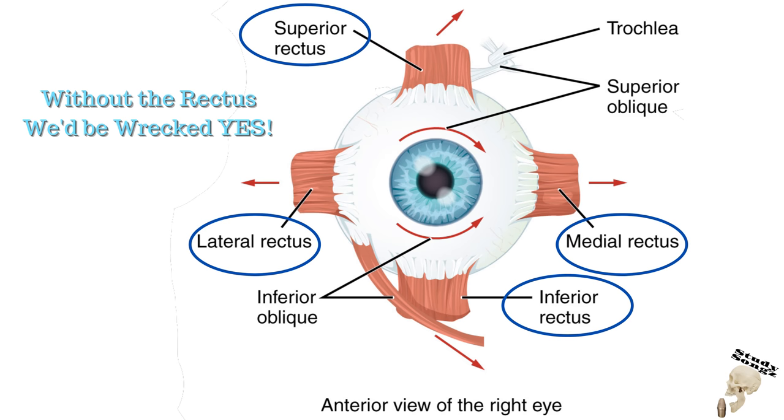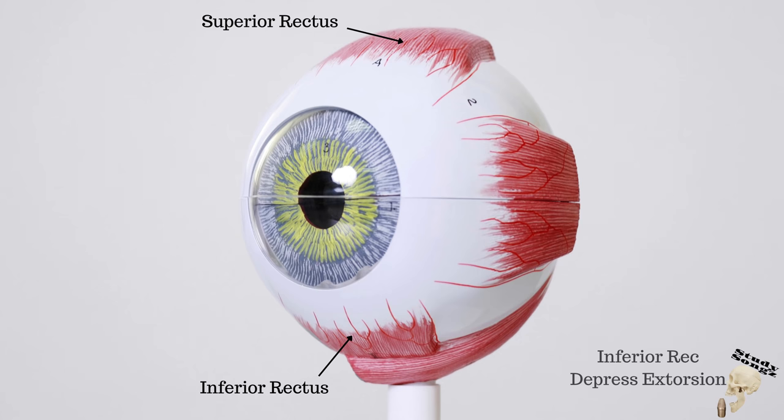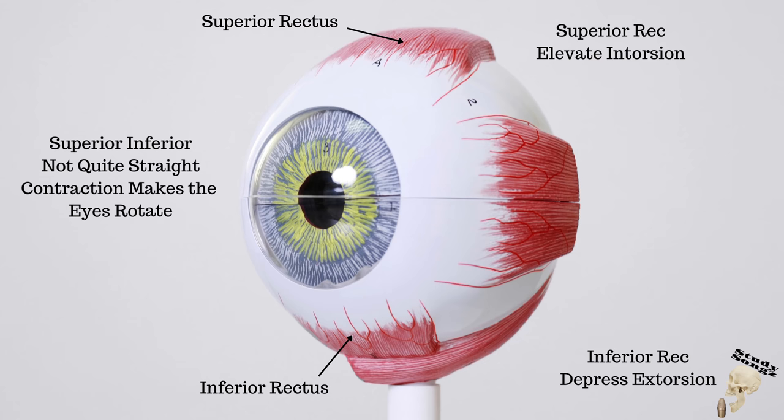Roll those eyes — yes, use those rectus. Eye elevation: superior rectus. Eye depression: inferior rectus. Superior and inferior, not quite straight — contractions make the eye rotate. Inferior rectus: depression and extorsion. Superior rectus: elevation and intorsion. Superior and inferior, not quite straight.